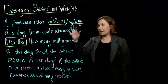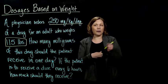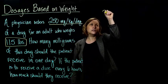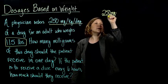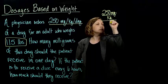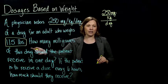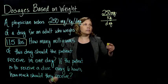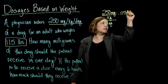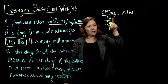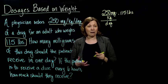I'm underlining the important information here. I've got the order — the amount that's been ordered — which is 250 milligrams per kilogram per day. So this order has been given in per kilogram, and our patient weighs 115 pounds. So we would multiply this by 115 pounds, but there's one problem: the ordered amount is in kilograms and we have the patient's weight in pounds.